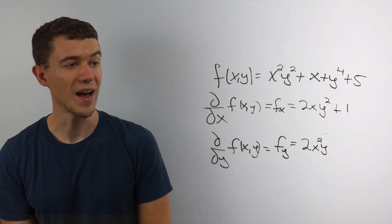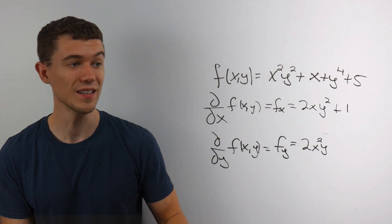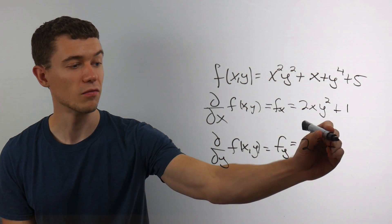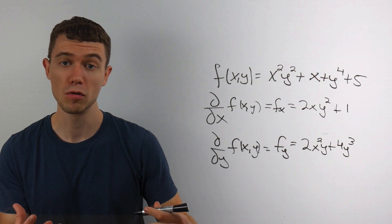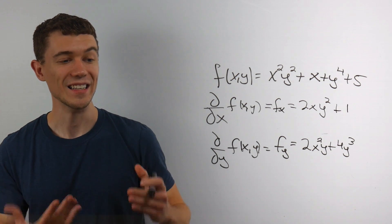The derivative of x is 0 because x is now a constant. The derivative of y to the 4th would be 4y cubed, just like you would expect from the power rule. And the derivative of 5 is 0.